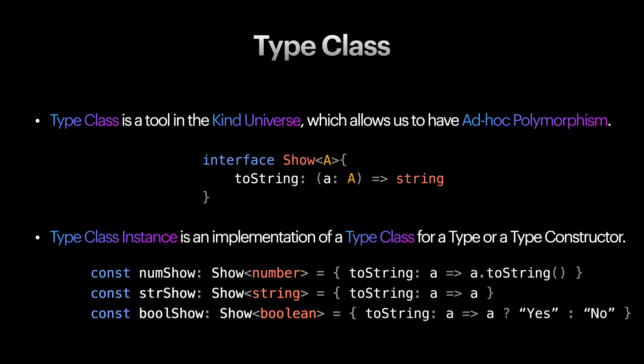For example, numshow, strshow, and boolshow are three instances of type class show. So, do not confuse the term class in type class with the class concept in object-oriented programming, as they represent different concepts with different meanings and purposes.